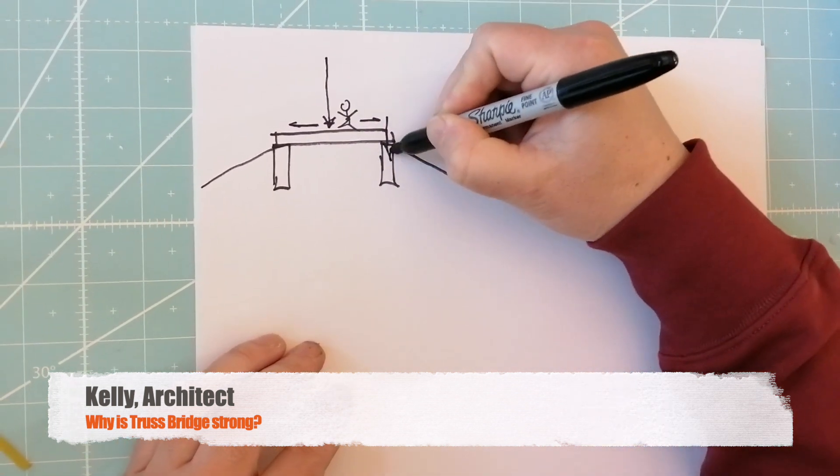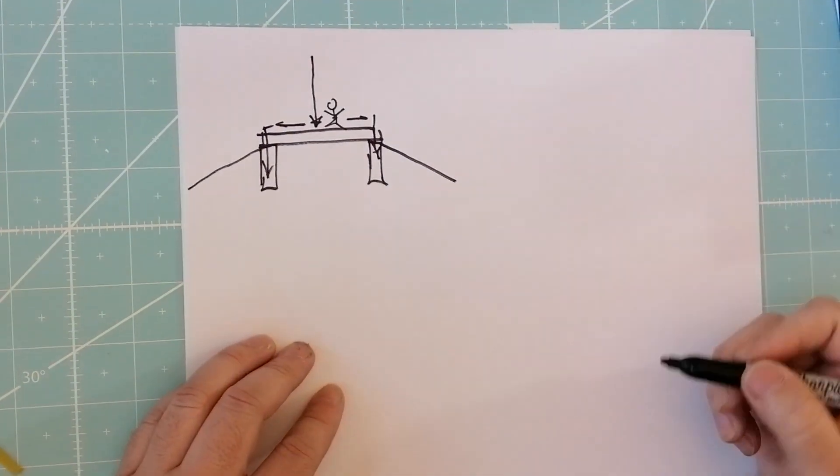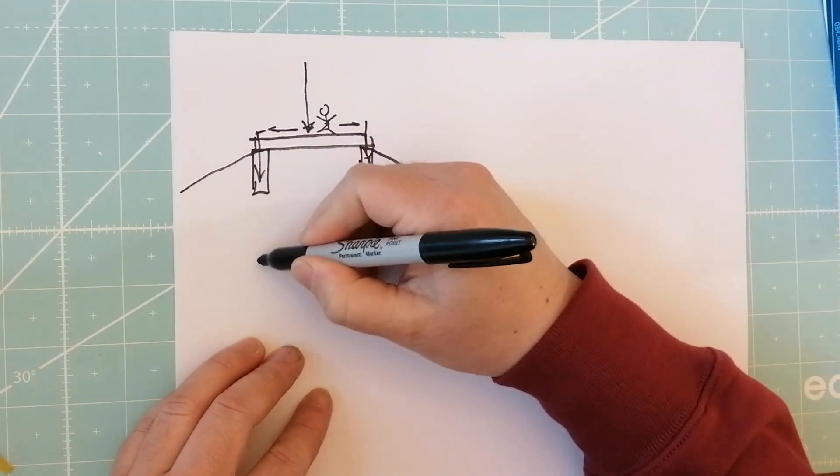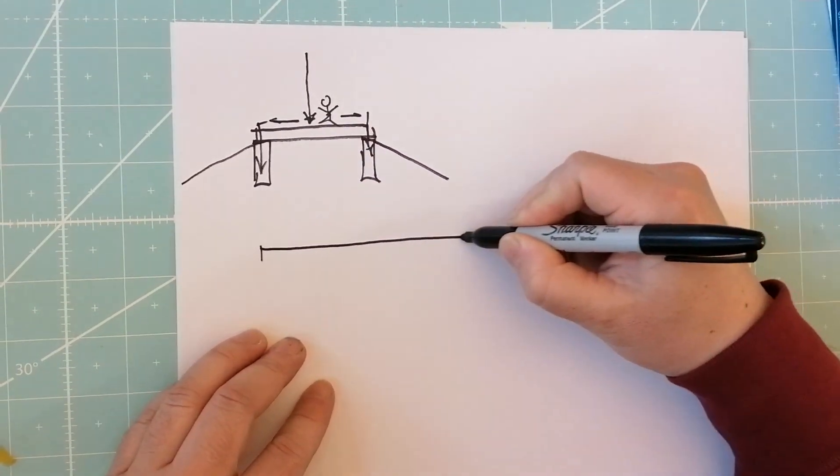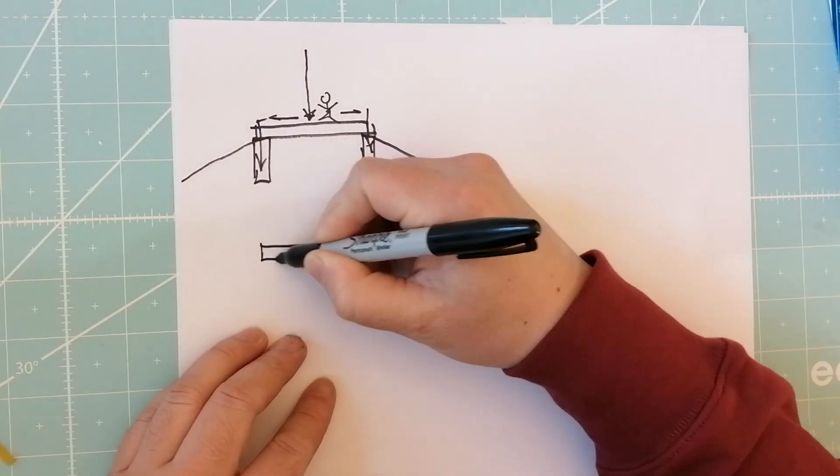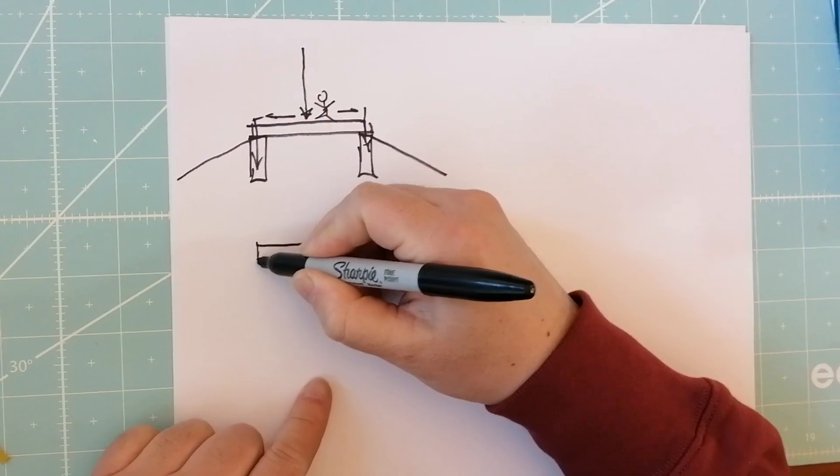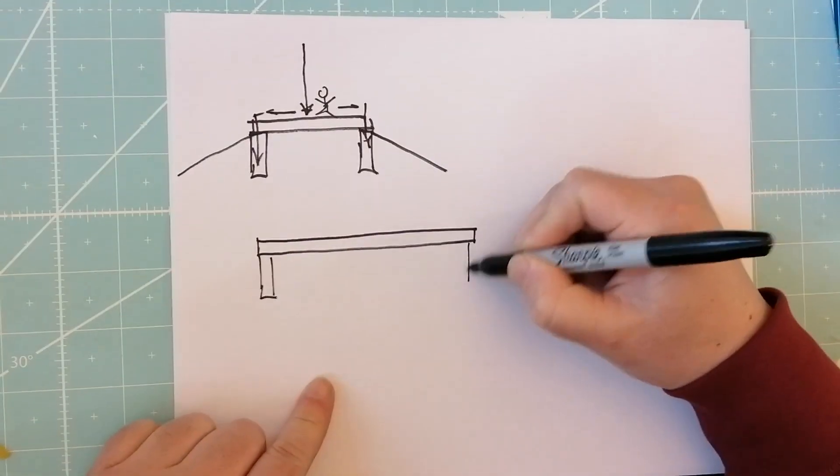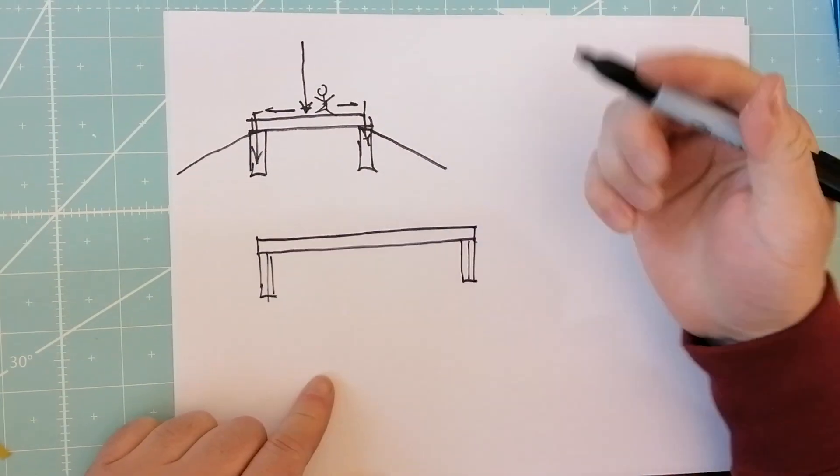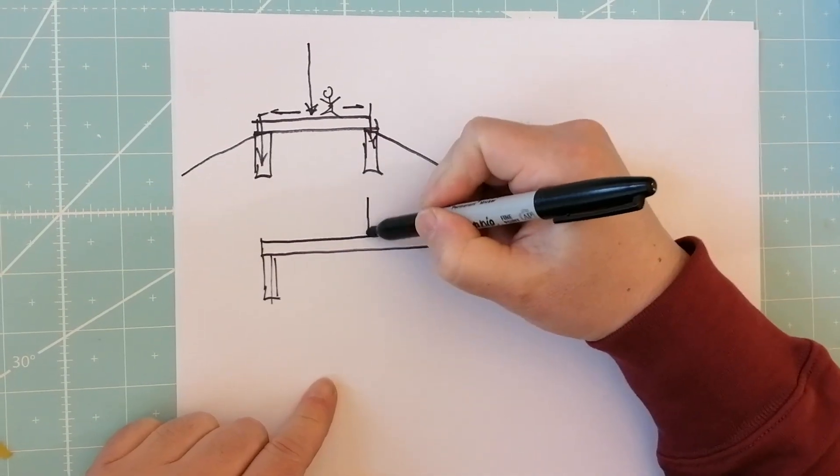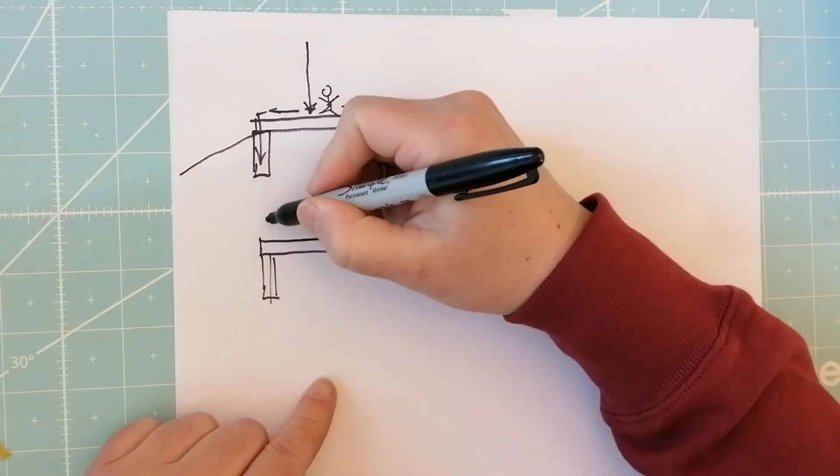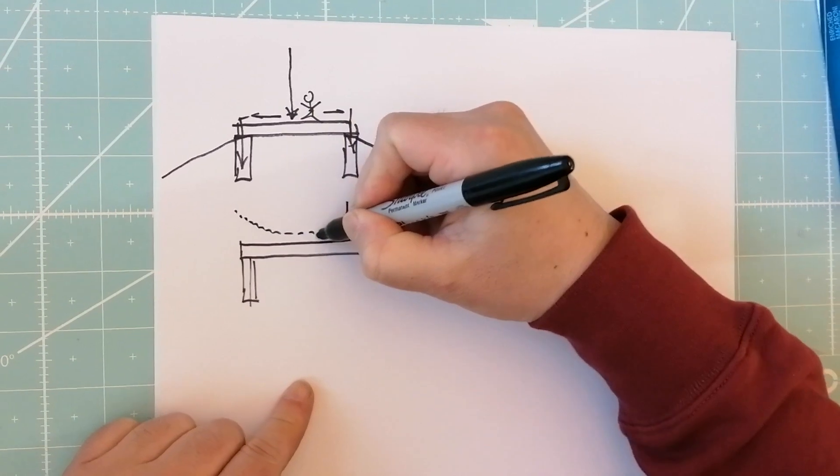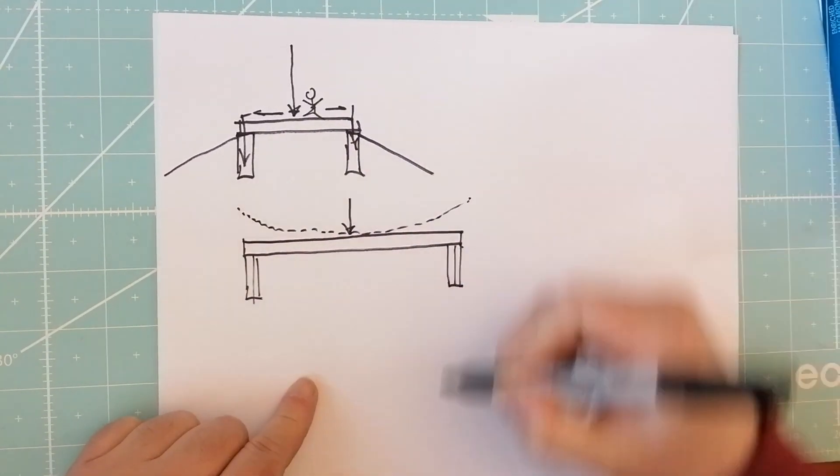And then they go down into the column. So let's say that we want to span a longer bridge, a longer distance. You're going to need something stronger because as this bends, this begins to bend up, that's deflection.